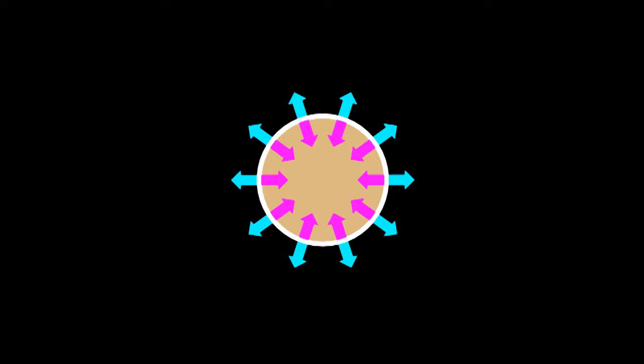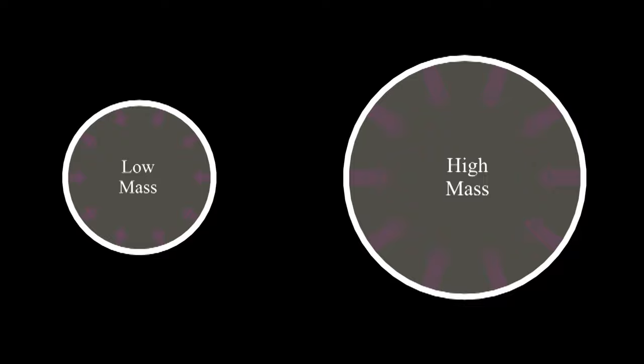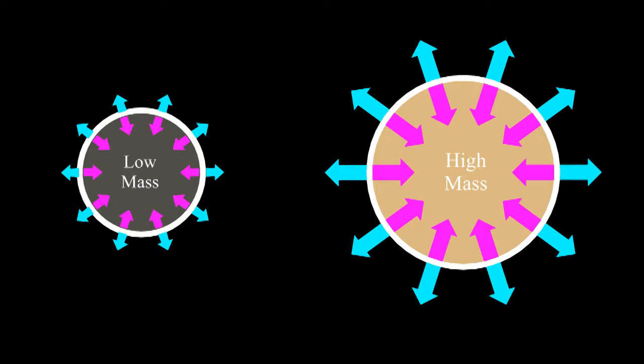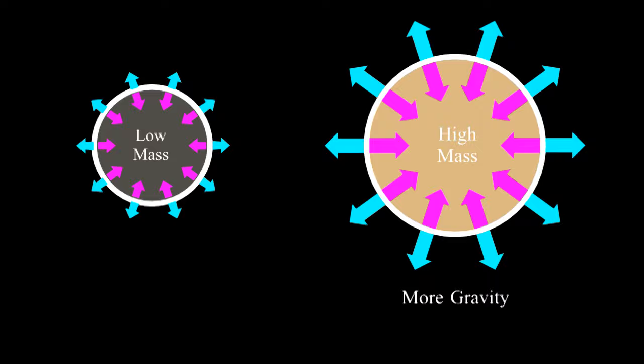The gravity depends on mass. A massive star has more gravity, so more pressure is needed to resist it. The gas cloud will continue to contract until the temperature and pressure are high enough to fully resist gravity. Since massive stars have more gravity, they will have more pressure and therefore more heat.